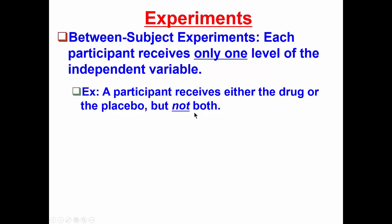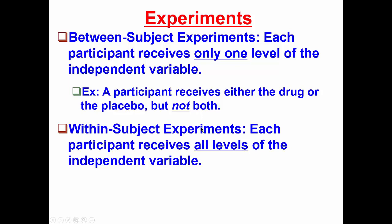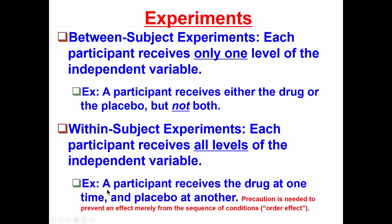We can contrast this with the other major type of research design, which would be a within-subject experiment, sometimes also called a repeated measures experiment or a repeated measures design. Here, each participant receives all levels of the independent variable. Staying with our earlier example, a participant receives the drug at one time and a placebo at another time.